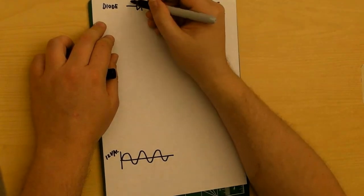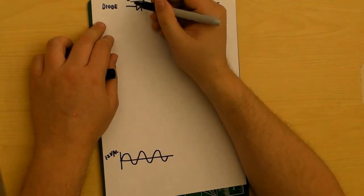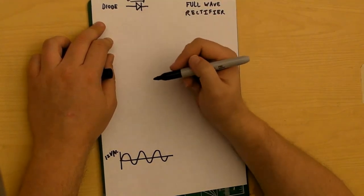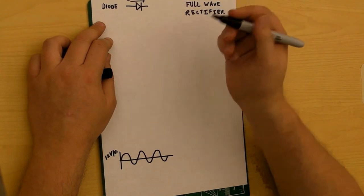And in this case, positive charge is flowing to the right here. So we can use a diode to make a full wave rectifier. Let me show you how it's done.